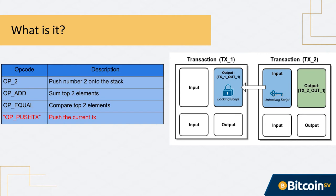The Bitcoin virtual machine has a list of instructions which we usually call opcodes. For example, OP_2 — since the virtual machine is stack-based, all operations are on the stack — OP_2 just pushes the number 2 onto the stack. We also have OP_ADD, which pops two elements off the stack, adds them, and pushes the sum back. And OP_EQUAL, which compares the two elements on top of the stack and pushes 1 if equal, otherwise 0. So OP_PUSH_TX, you can think of as another opcode — it just pushes the current transaction onto the stack. That's it.